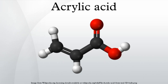It was once manufactured by the hydrolysis of acrylonitrile, which is derived from propane by ammoxidation, but was abandoned because the method co-generates ammonium derivatives. Other now-abandoned precursors to acrylic acid include ethenone and ethylene cyanohydrin.